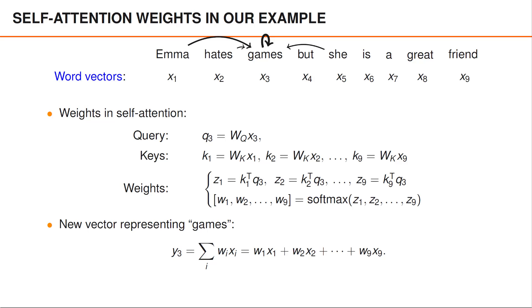As before, we compute the weights using a softmax. This will give rise to weights that are different to the weights we computed for the word friend, and perhaps the words Emma, hates, games, and she will now receive large weights.